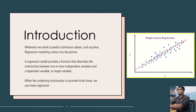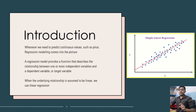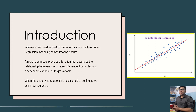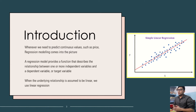Whenever we need to predict continuous values such as price, regression modeling comes into the picture. Two types of variables exist: continuous values and discrete values. Discrete values are a defined set of values, for example class labels like orange, apple, banana, whereas continuous values such as the price of a particular house or the age of a person. A regression model provides a function that describes the relationship between one or more independent variables and a dependent variable or target variable.